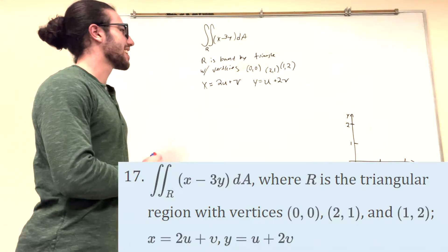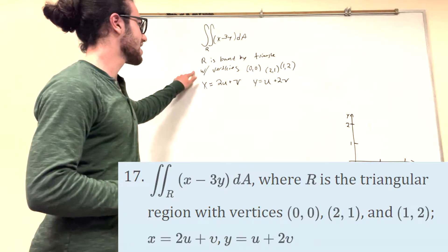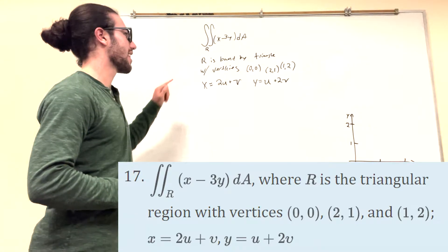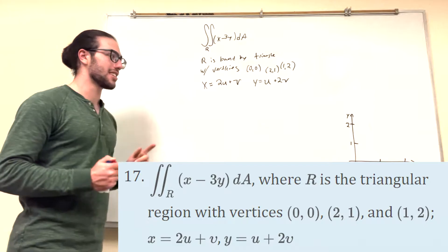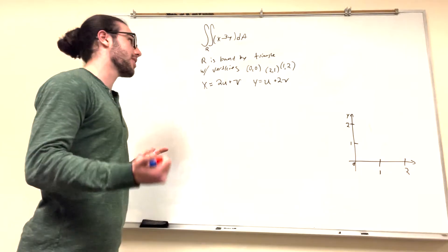It says you get a double integral here, and R is bounded by the triangle with vertices (0,0), (2,1), and (1,2). And it gives you these two transformations.